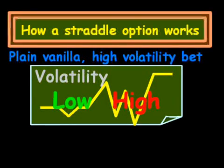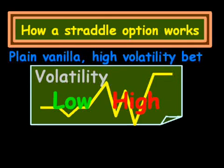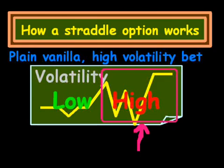In front of me, I have a volatility drawing. On the left, I have low. On the right, I have high. And essentially, we are betting with a straddle option on high volatility — on the right side there in red.